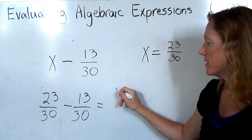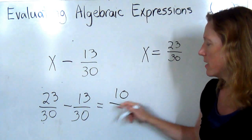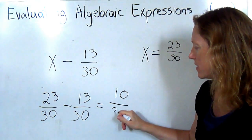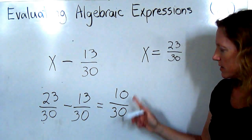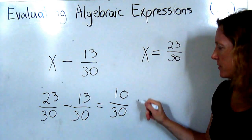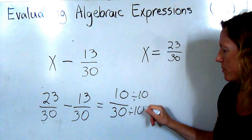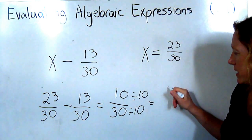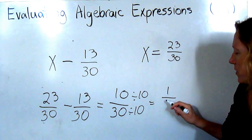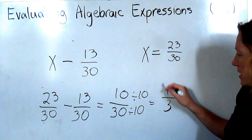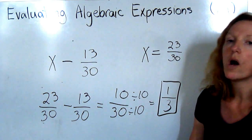And I'll be subtracting 13 over 30. 23 subtract 13 is 10. The denominator stays the same. 10 over 30, they have a common factor of 10, so I'll divide both the numerator and the denominator by 10. 10 divided by 10 is 1. 30 divided by 10 is 3. My answer is 1 third.